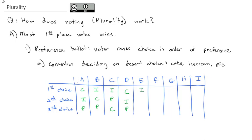E wants ice cream, pie, and then cake. F prefers pie, then cake, then ice cream. G wants cake, then ice cream, then pie.